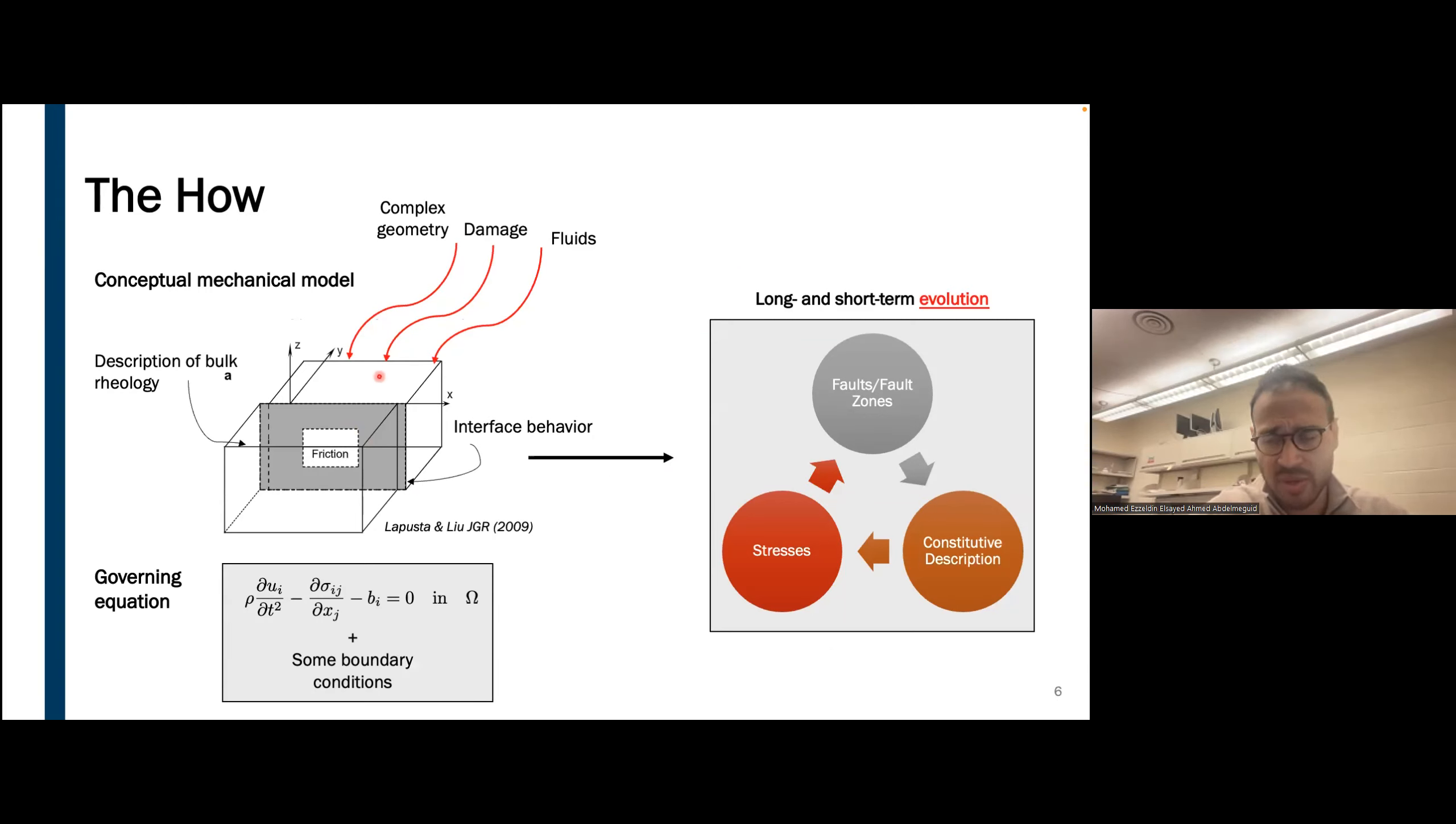How exactly do we do that? Much like any engineering problem, we start with a simple conceptual model that has some idealization. We define a bulk and the frictional surface. One can think of a very big fracture problem, and we define a set of governing equations with boundary conditions. Our objective is to study the long-term and short-term evolution of this fault surface. As we keep going, we can add more complexity, such as complex geometry of the fault, damage, fluid infiltration, all of these complexities we can add later on.